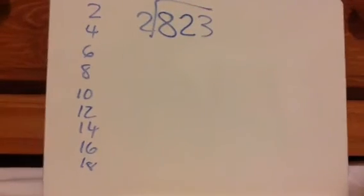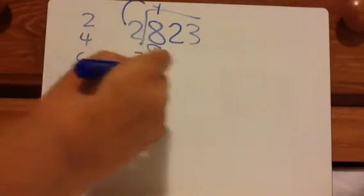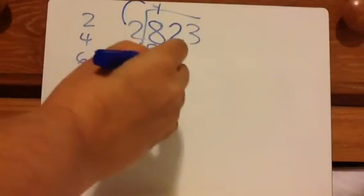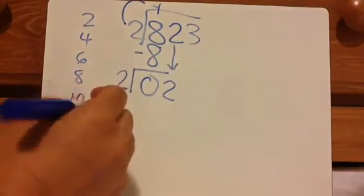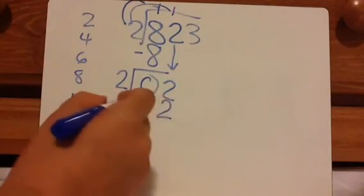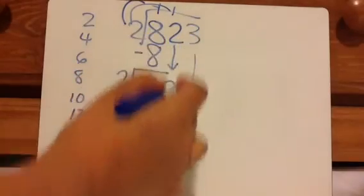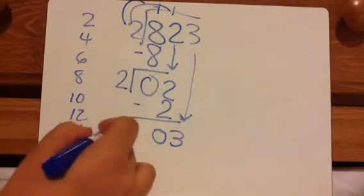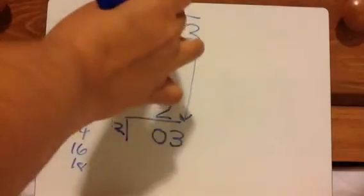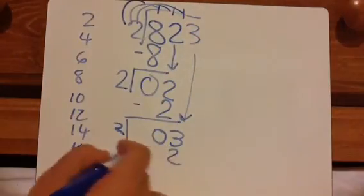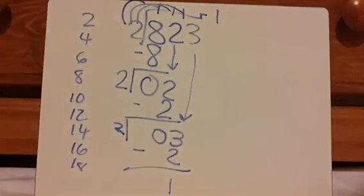Let's look at another example, but this time we're going to be dividing into a 3-digit number. 2 goes into 8 four times. 4 times 2 is 8. 8 minus 8 is 0. Then you bring down the 2, and now you're going to do 2 divided by 2. 2 goes into 2 one time. 1 times 2 is 2. 2 minus 2 is 0. Bring down the 3. 3 divided by 2 is 1. 1 times 2 is 2. 3 minus 2 is 1. So my answer is 411 remainder 1.